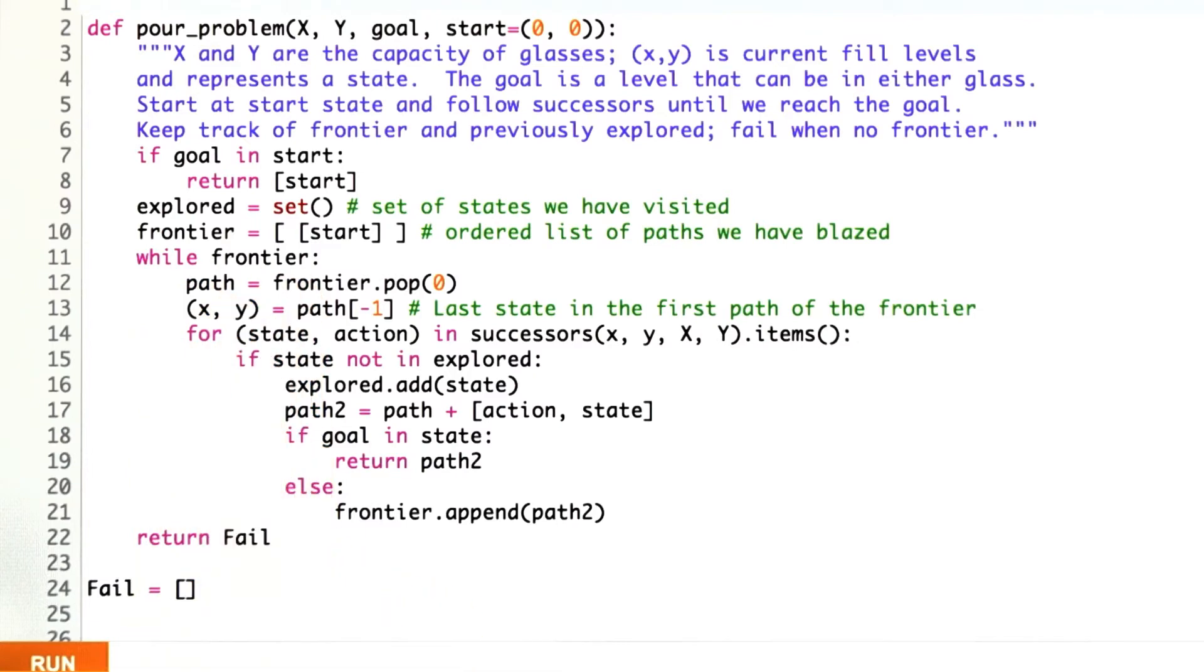While the frontier is left, while there are still frontier states that we haven't explored from yet, we pop off the first one. Pop of 0 says take the 0th element of the list. We're going to pull elements off of the front of the list and push them onto the end of the list. Then say the current state is the last element of the path. The path goes from one state to the next, and the last element of the path is the current state. Let's take x and y from there.